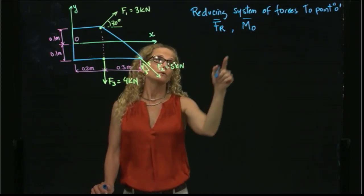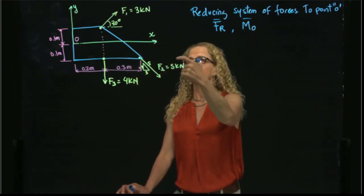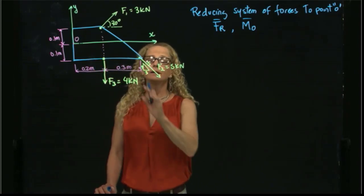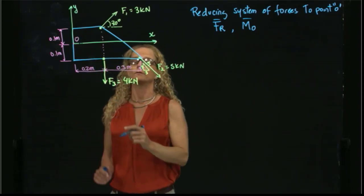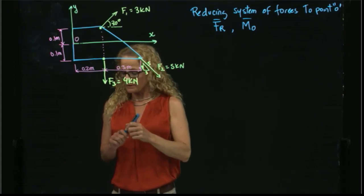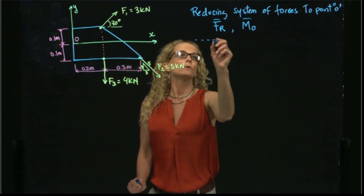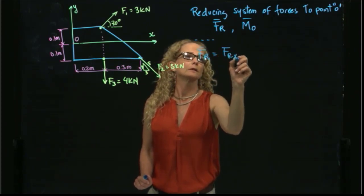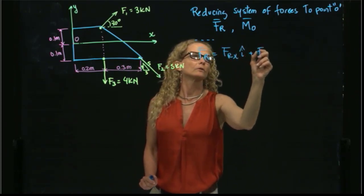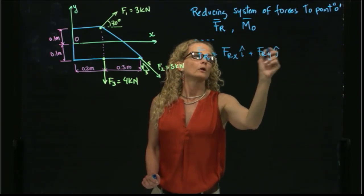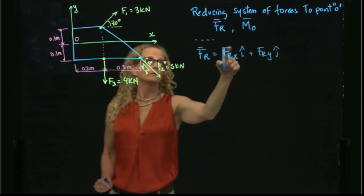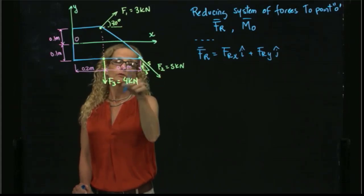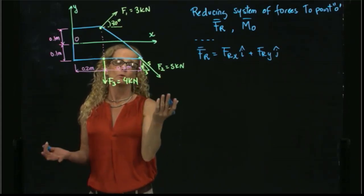Since it's a 2D problem, we know that the moment is in the direction perpendicular to the screen, in the K direction — it could be negative or positive K. The resultant force will have two components: resultant force in X plus resultant force in Y. To find those, we express each of the three forces in terms of its components.